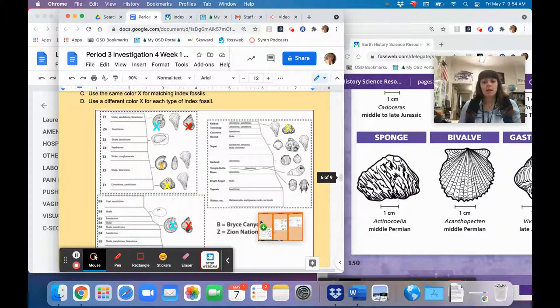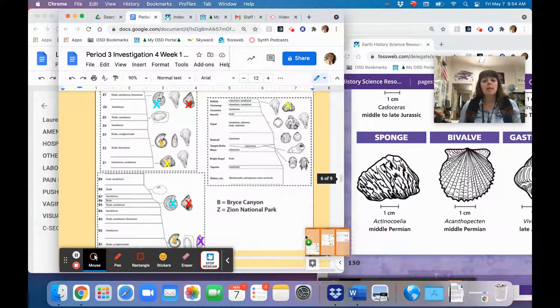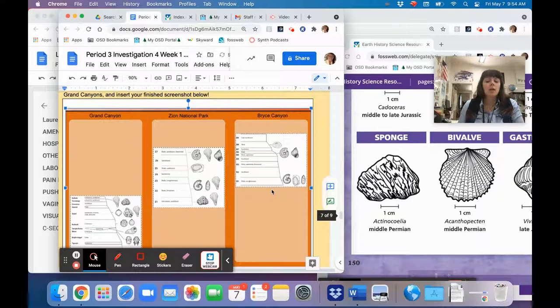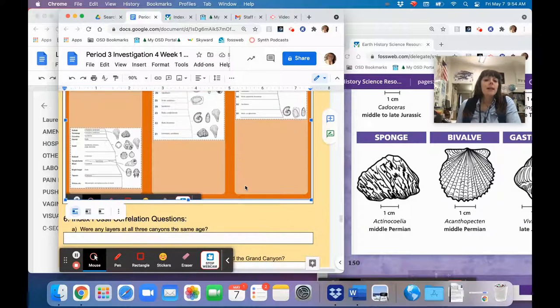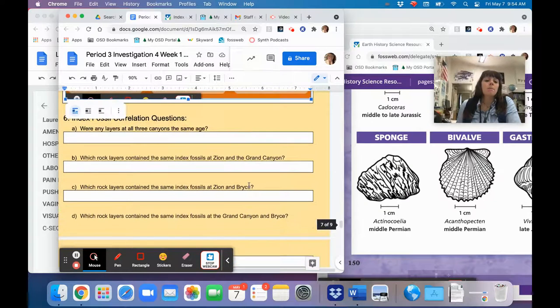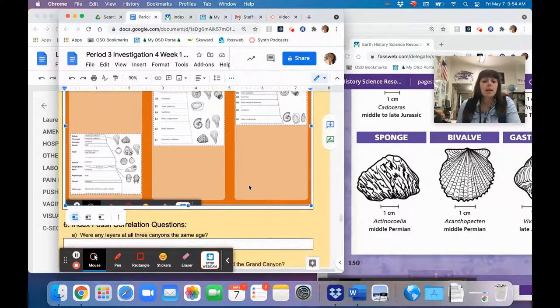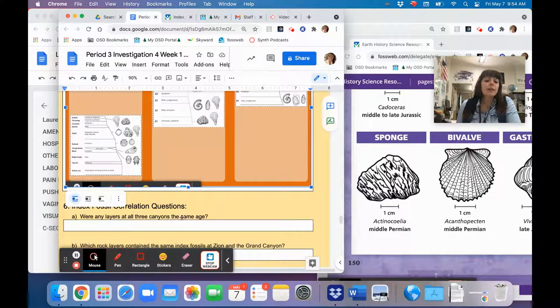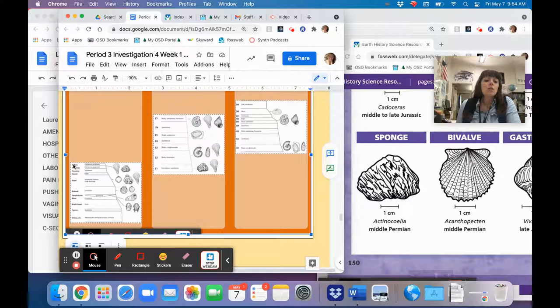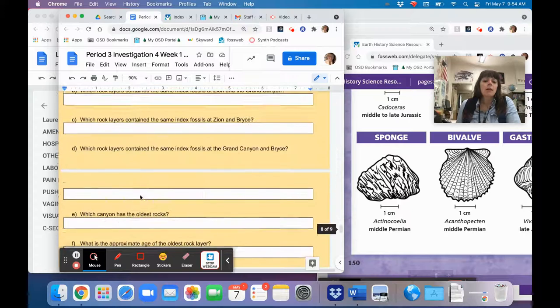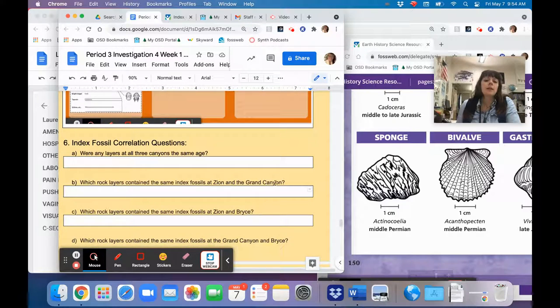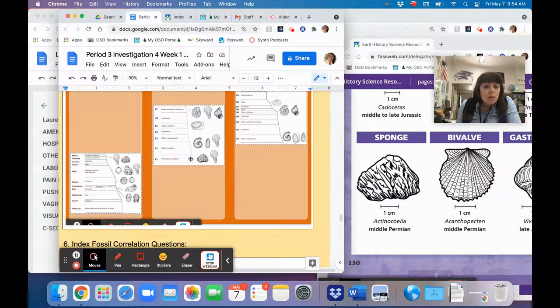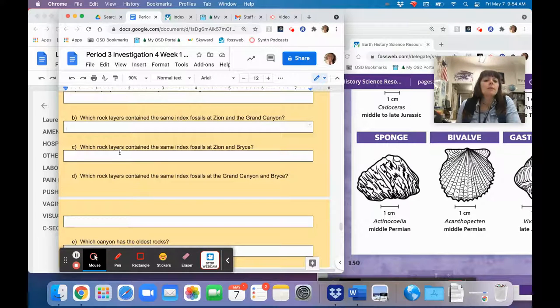You should click on copy to clipboard. I'll see if I can snag this. Oh yeah, it did let me snag it, but I need to scroll down to put it in. All right, now my last step is to answer some questions about it. Some of these questions are tricky, but some of them are pretty doable. So were any of the layers at this canyons the same age? Are there any layers that line up across all three canyons? No. So that would be a no. Which rock layers contain the same index fossils at Zion and the Grand Canyon? Z1 and Kaibab.